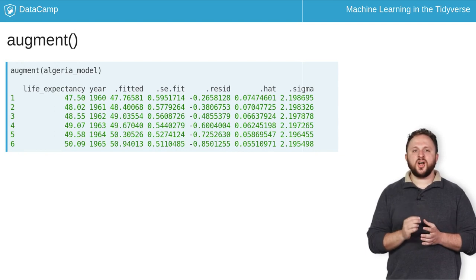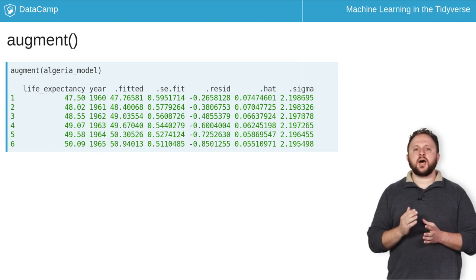Finally, the augment function builds an observation level data frame containing the original data used to build the model, as well as the predicted value for each observation as the column dot fitted. Furthermore, augment appends model-specific statistics of fit for each observation. By constructing a data frame containing both the original values and those predicted by our model, you can explore the fit of the model.